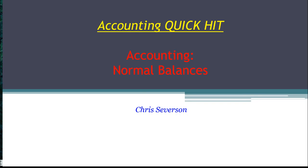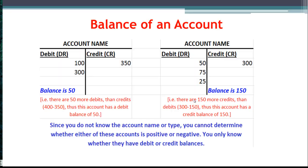Hello everybody and welcome to our accounting quick hit video on the topic of normal balances of accounts. In previous lectures we talked about journal entries and posting those journal entries to T-accounts, and we mentioned that a debit is always going to be on the left hand side and a credit is always going to be on the right hand side.